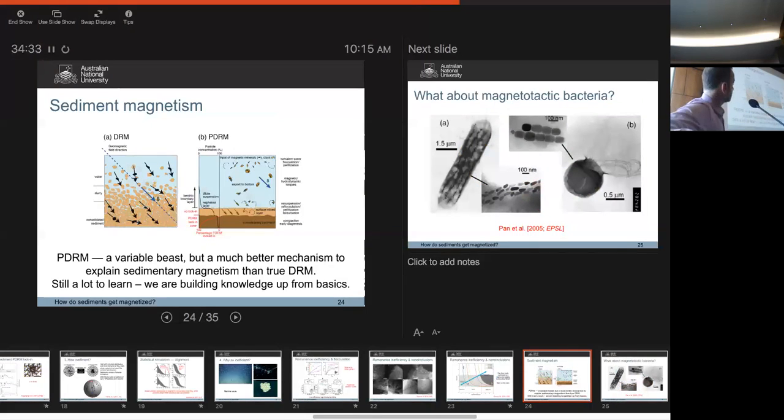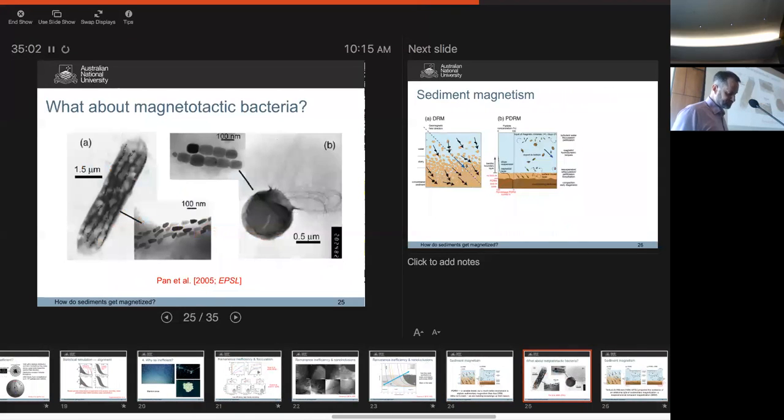That's a quick tour through a PDRM. It's a variable beast. Lock-in can vary quite a lot in the same place, I would argue. But I would say it's a much better mechanism to explain sedimentary magnetism than a true DRM. I'd say we still have a lot to learn. And we're at a phase in the history of our field where I think we're rebuilding knowledge up from the basics. We're recollecting the data to test some of these core concepts in our discipline.